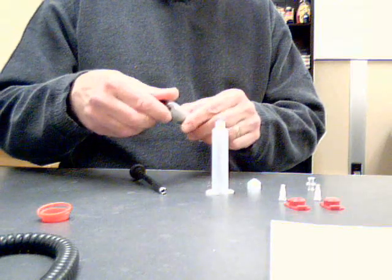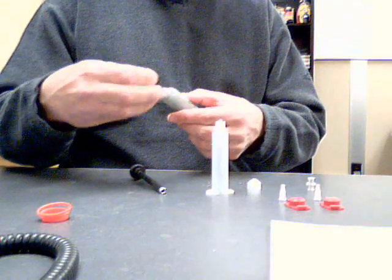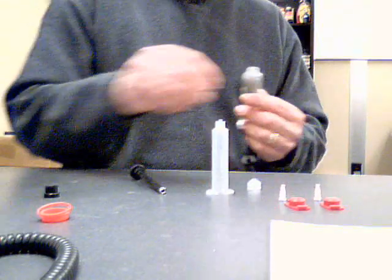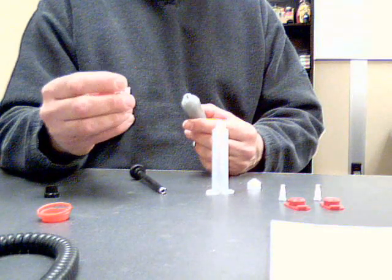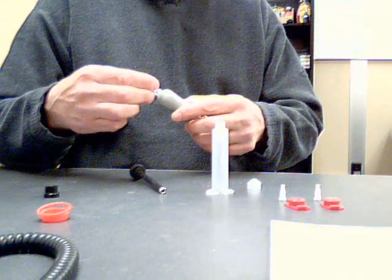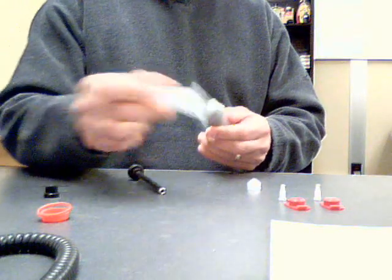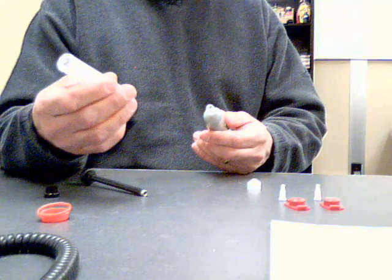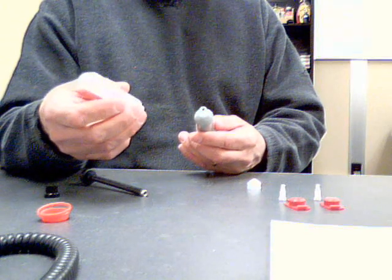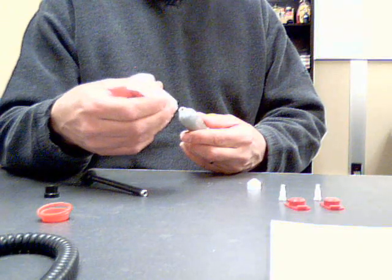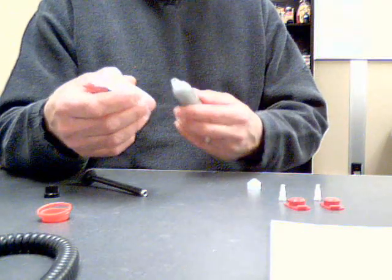Next, I'm going to take off the cap and install a lure-to-lure connector. This will simply thread in and will allow me to attach my syringe that I'm filling. This happens to be a 10cc syringe. I'm going to be attaching it directly to here and filling through the nose.